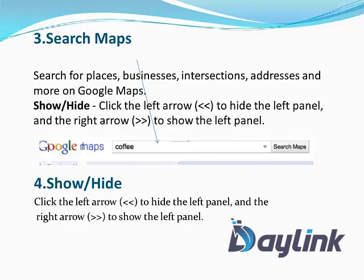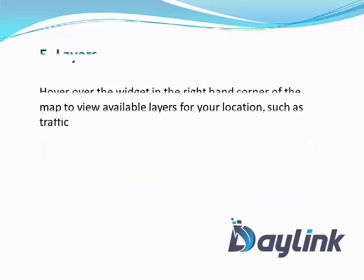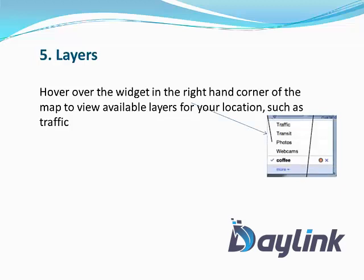Show and Hide. You can use the left arrow or right arrow to show or hide the panel. Layers. Hover over the widget in the right-hand corner on the map to view available layers for your location, such as traffic. Click, and here you can see how this looks.